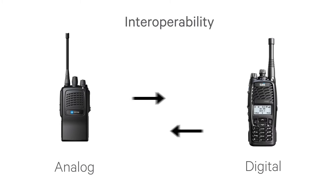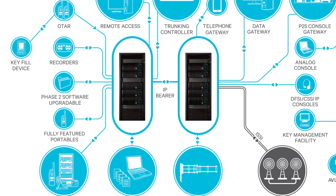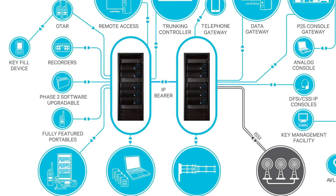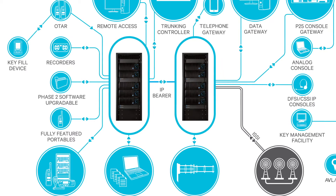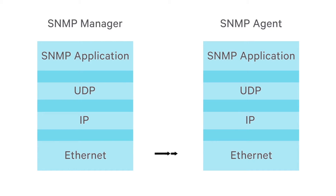Many P25 digital radio systems also include analogue gateways. These allow digital radio channels to interface to legacy analogue dispatch equipment or analogue channels for interoperability. Some of these gateways even translate analogue signalling protocols like MDC 1200 into their P25 equivalent. Because P25 systems are typically IP connected, standard IP protocols for fault management can be used, and many P25 radio networks can interface to existing SNMP management systems.